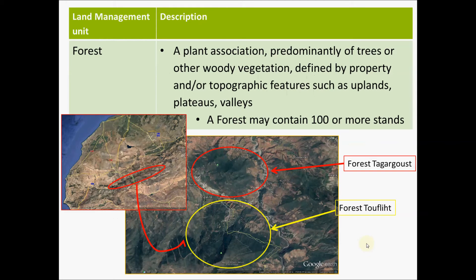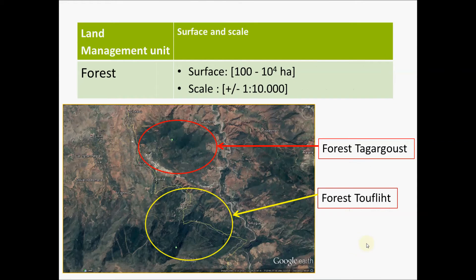This forest region is itself divided into forests that, from a silvicultural point of view, are defined as a plant association predominantly of trees or other woody vegetation, defined by property and/or topographic features such as uplands, plateau, and valleys. A forest may contain 100 or more stands. Here I show you two forests in the region of the High Atlas south of Marrakech in Morocco. The surface considered for forests is normally between 100 to 10,000 hectares and the scale is around 1 to 10,000.